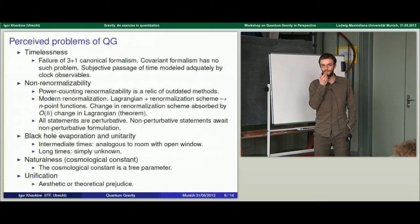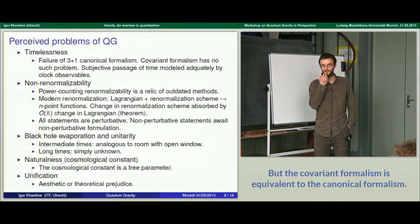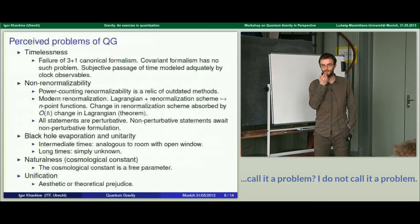There's the problem of timelessness. I think this is a failure or defect of the three-plus-one canonical formalism — it makes things appear like there's no evolution. But if you use a different formalism, like a covariant one, that goes away. Would you call it a problem that you no longer have a trajectory in quantum mechanics? No. It's the same thing: spacetime is a generalized trajectory, and in quantization the trajectory is gone.